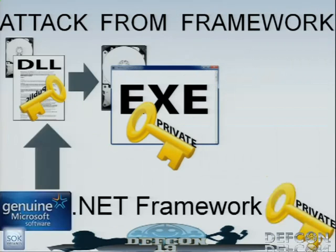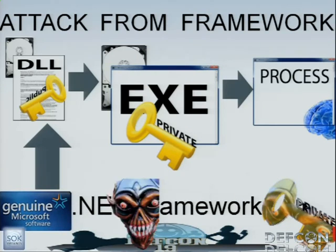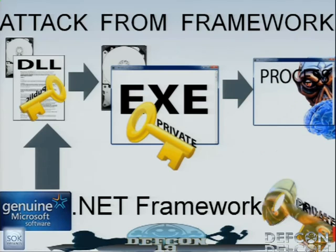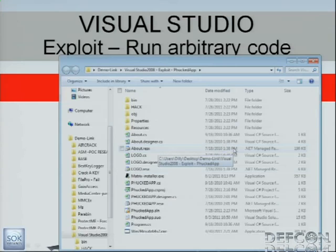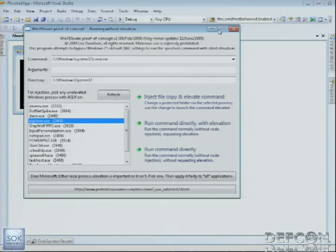Attacking from the .NET framework itself — same idea. It becomes a process; you infect the framework. Every application calls the framework, and then you're in the process — globally in every single application on the system that runs .NET. Visual Studios: there's an exploit in Visual Studio to run arbitrary code. It brings up 'oh, you downloaded this off the internet, you could be in danger' — and it runs arbitrary code when you open a form.